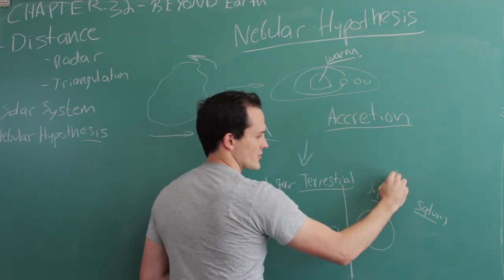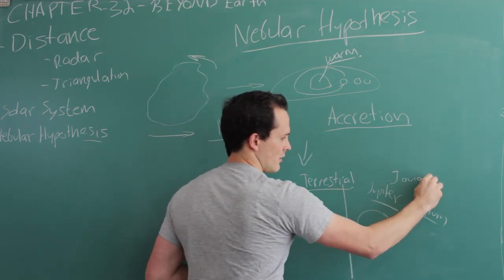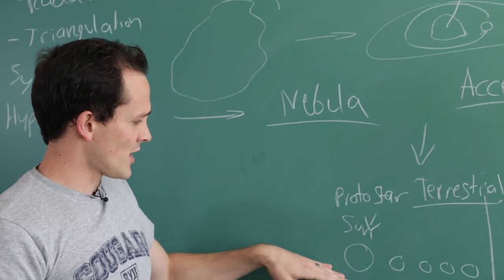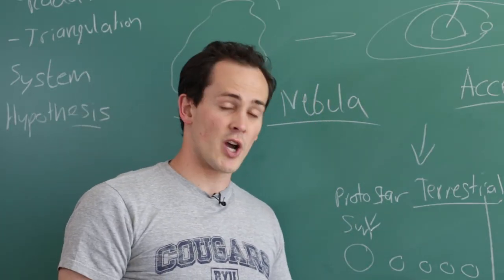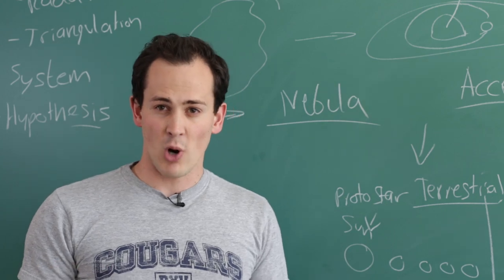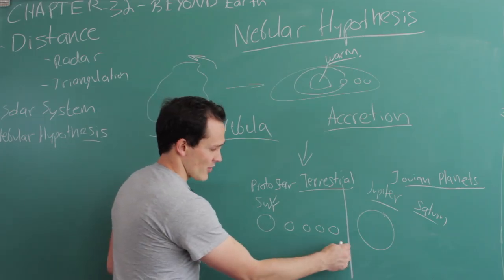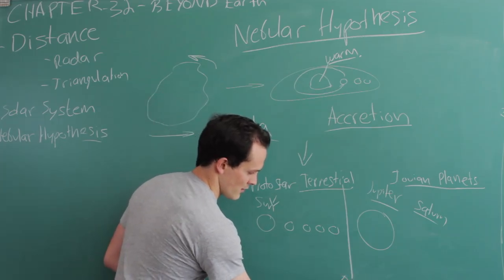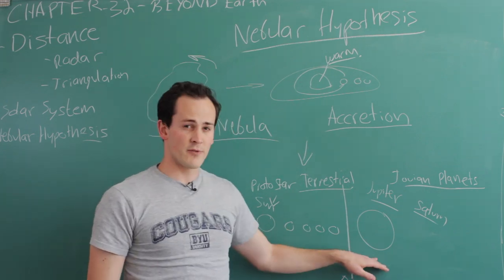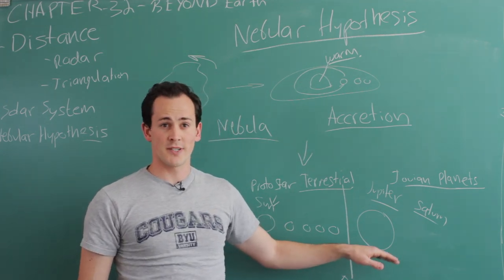From our previous discussion, you know these are the Jovian planets. To sum up, the sun was warm enough so that the only stuff that could accrete would be rocky metallic particles. Outside of the frost line, it was cold enough for ices to be able to accrete and develop together.